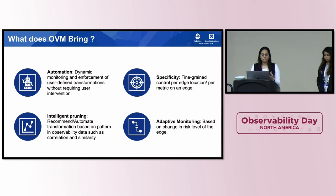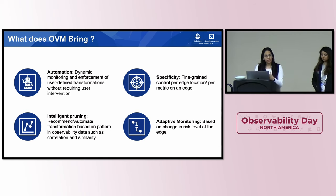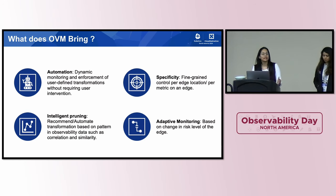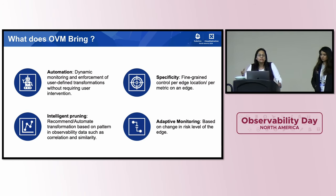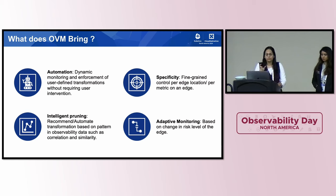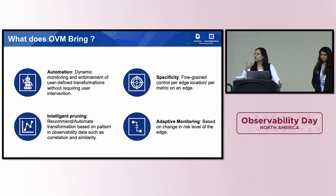Observe smartly is something we bring in through intelligent pruning — we analyze collected metrics and recommend transformations that can be applied. Because, as Vaishnavi said, there are billions to trillions of metrics being collected every day. You don't know what transformations need to be applied or what patterns these metrics have. There can be similarities across patterns, and some metrics can be derived from other metrics. These are patterns that our intelligent pruning can provide or recommend, and once you like a recommendation, you can automate it and let it be part of the automation cycle.